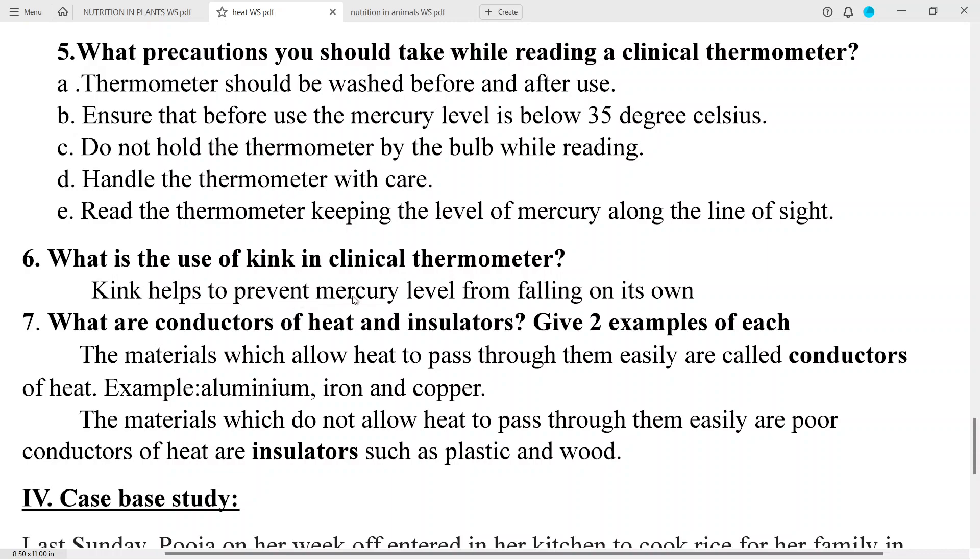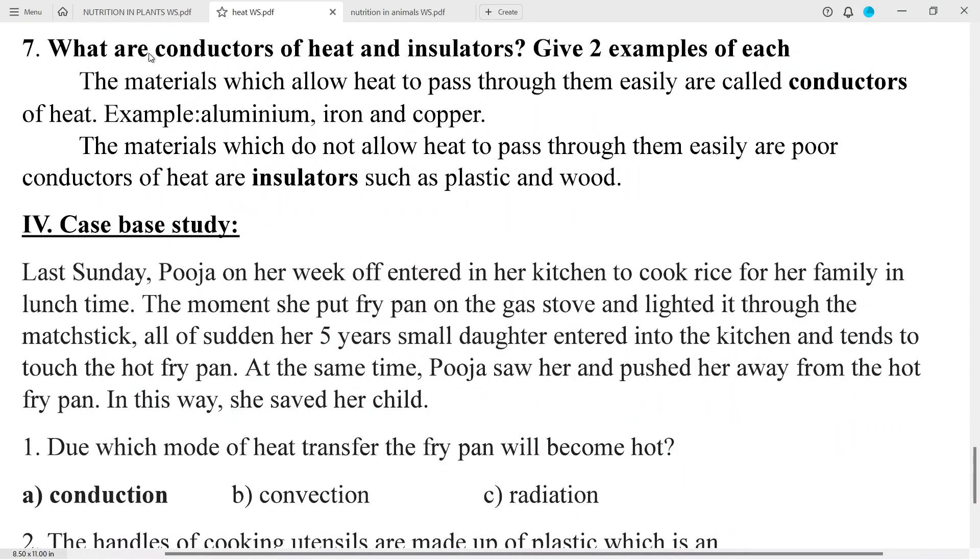Kink helps to prevent mercury level from falling on its own. Question 7: What are conductors of heat and insulators? Give 2 examples of each. Answer: The materials which allow heat to pass through them easily are called conductors of heat. Example: aluminum, iron and copper. The materials which do not allow heat to pass through them easily are poor conductors of heat or insulators such as plastic and wood.